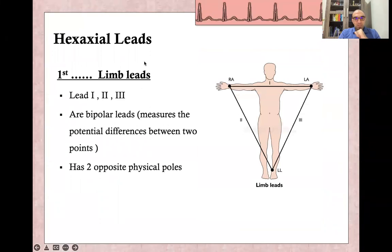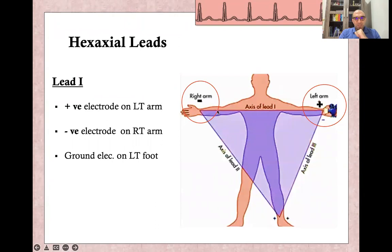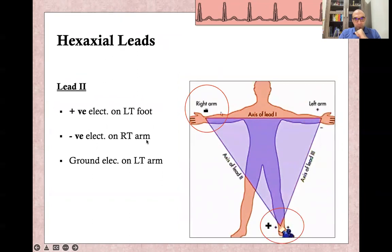Let's start with the limb leads: lead 1, 2, and 3. These are all bipolar leads, meaning they measure the difference between positive and negative points, and all have two opposite physical poles. Lead 1 has a positive electrode in the left arm, negative electrode in the right arm, and the ground electrode in the left foot. The lead direction moves from negative to positive. Lead 2 has a positive electrode in the left foot, negative electrode in the right arm, and the ground electrode in the left arm.